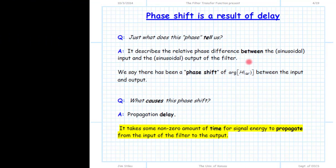The phase of the complex transfer function tells us the phase shift between the input and output oscillation at frequency omega. The important question is: what causes this phase shift? We can attribute it to propagation delay — it takes a finite amount of time for the electromagnetic wave to propagate from the input of the filter to the output. That delay results in what appears to be a phase shift between input and output. This idea of propagation delay is key to understanding filter behavior.